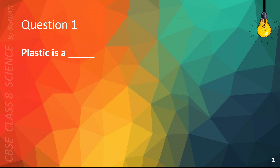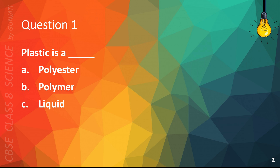Question 1. Plastic is a blank. A. Polyester. B. Polymer. C. Liquid. Or D. Gas. The correct answer is B. Polymer.